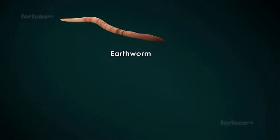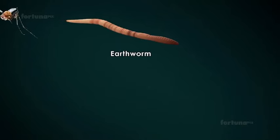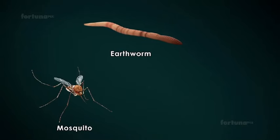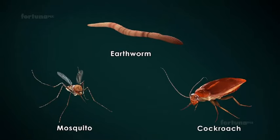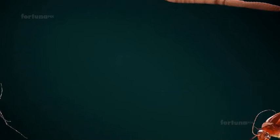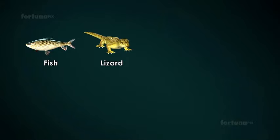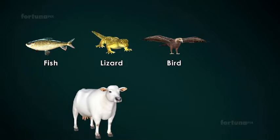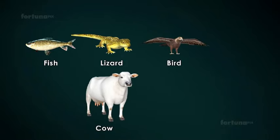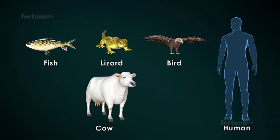Kingdom Animalia includes animals without bones, such as the earthworm, insects such as the mosquito and cockroach, and animals with bones, such as fish, lizards, birds, cows, and humans.